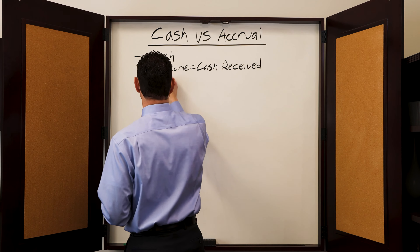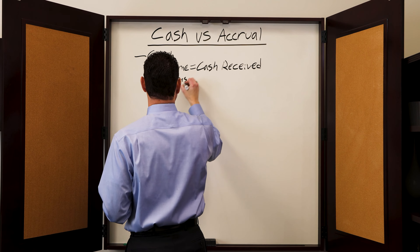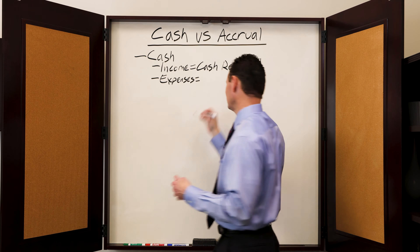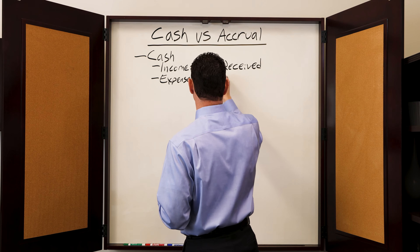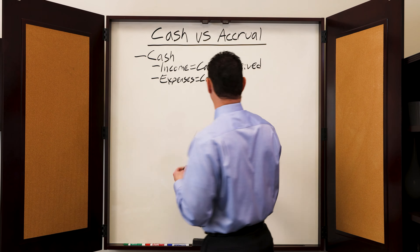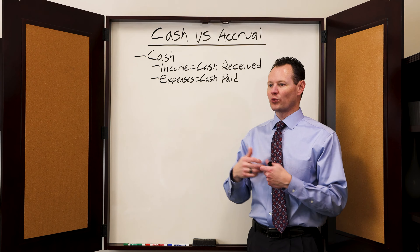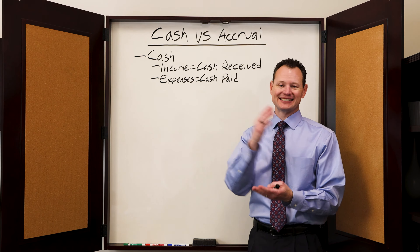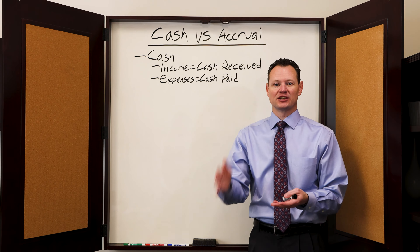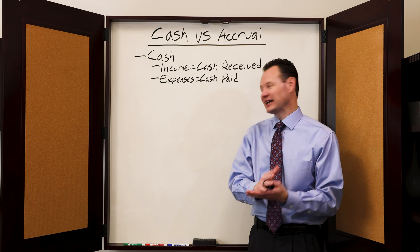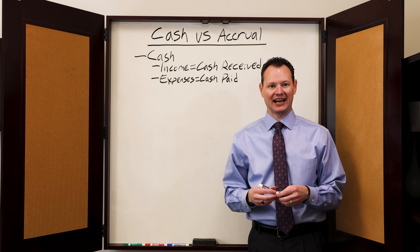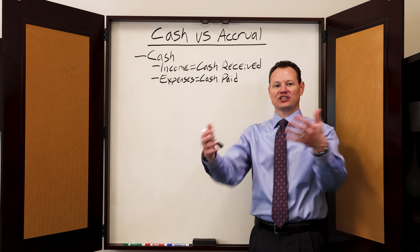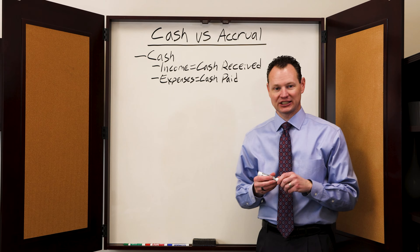Same thing with expenses — you recognize expenses when cash is paid. So when you write out a check, or you charge something on a credit card, or something is debited out of your bank account, you recognize an expense at that point. The cash method is very simple: cash in is income, cash out is an expense.